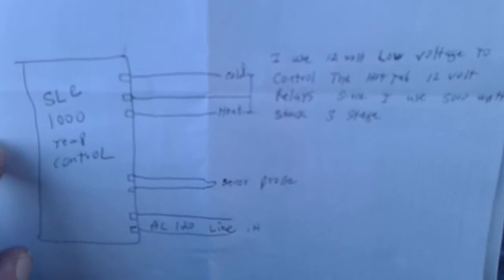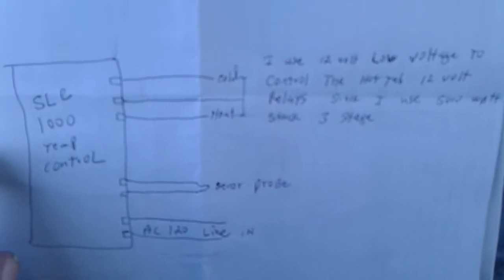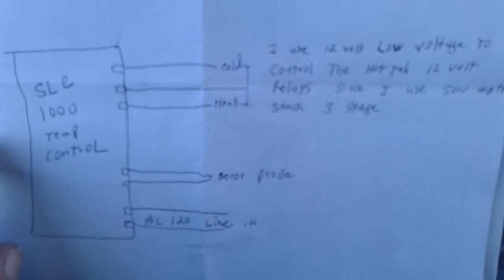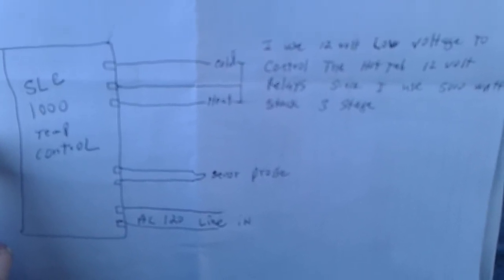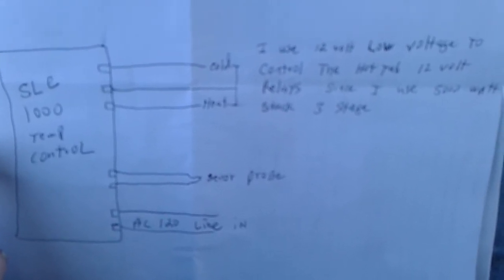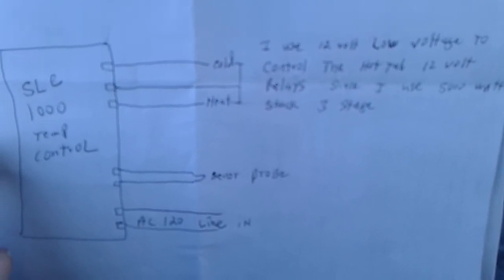So I basically unhooked the low voltage to the controller box, ran my own low voltage, soldered in my wires to the relay. And so I'm controlling three relays in the controller box of the hot tub. And that is the three relays turn on the ground, or the neutral, and the hot legs on both sides.